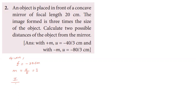Magnification is three times: image size by object size equals minus v by u. Two cases arise — virtual image gives magnification plus three, and real image gives magnification minus three. So minus v by u equals plus or minus three, giving v equals minus 3u for the real image case.